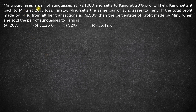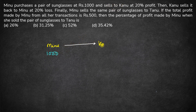Minoo purchases a pair of sunglasses for 1000 rupees and sells it to Kanu at 20% profit. 20% of 1000 is 200, so she will sell it to Kanu for 1200 rupees.